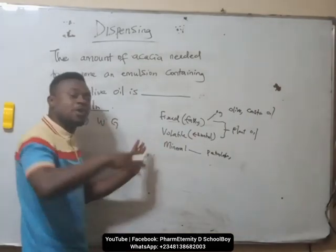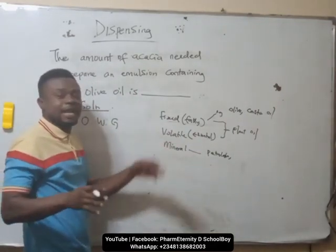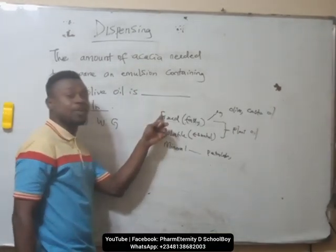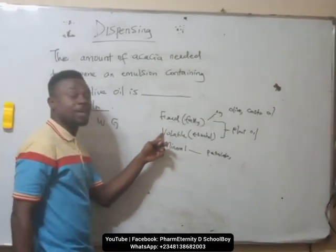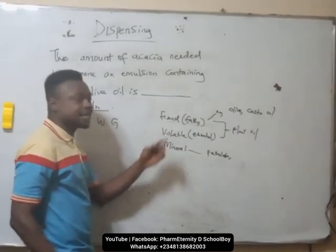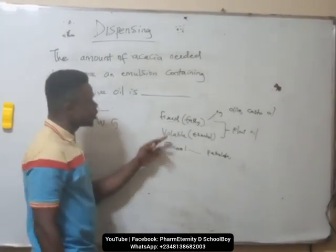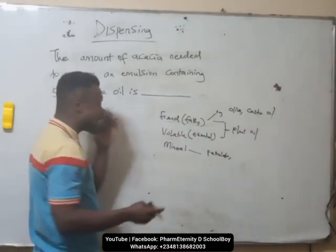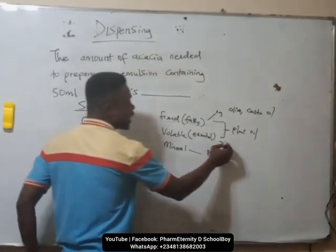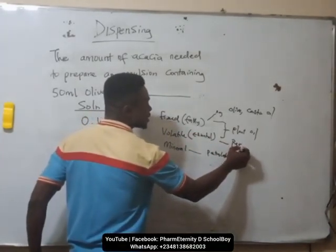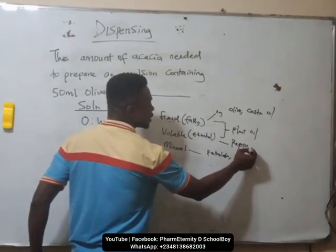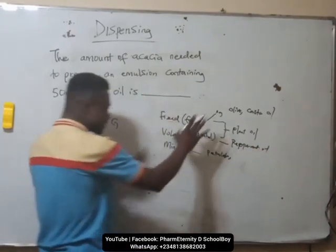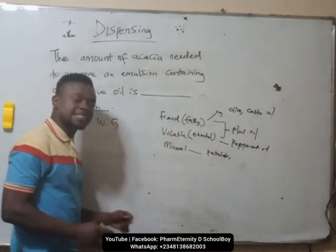The essential oils, you get them from other parts of the plant. These are volatile — they can evaporate easily — while fixed oils are not volatile. An example of an essential oil is peppermint oil. So these are the different types of oil.